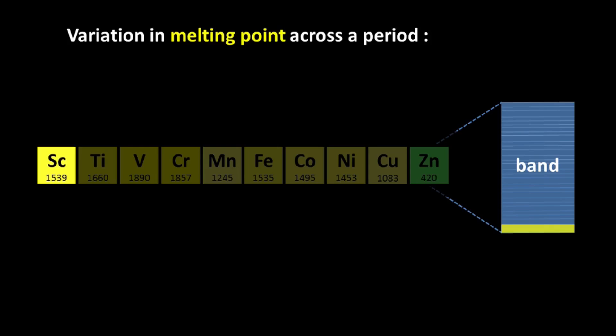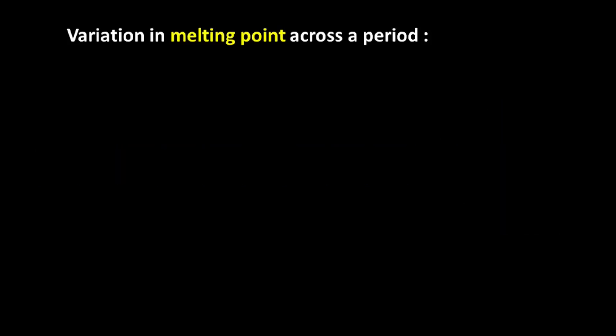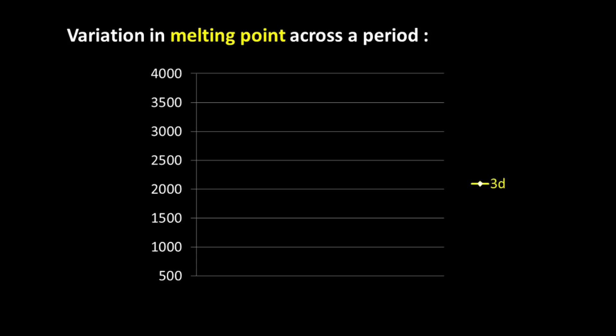Also as you might have guessed, initially the bonding gets stronger as the electrons start filling up the lower energy bonding molecular orbital and it peaks at around chromium. In manganese, some of the orbitals with anti-bonding characteristics also start filling up. The bonding starts getting weaker and ultimately it tapers down in zinc. So therefore, in the 3D series the melting point first increases and then decreases.